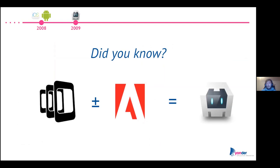Did you know Cordova is actually the open source version of Adobe PhoneGap? PhoneGap started this journey, and Cordova said, let's make it open source and have the community build this together instead of being proprietary from Adobe. Right now, Adobe PhoneGap has been dropped and its code is part of Cordova internally — a good decision on Apache's side.